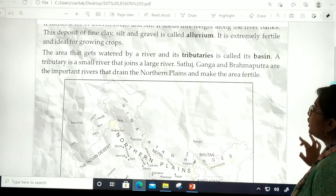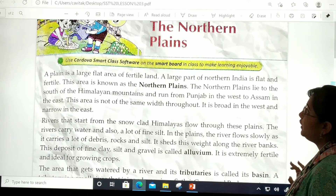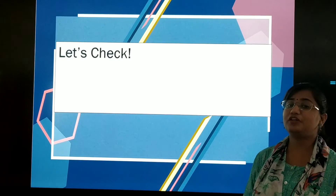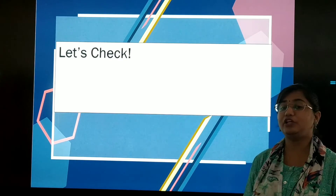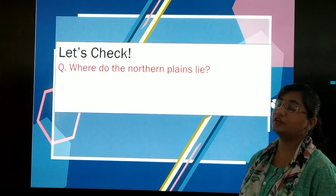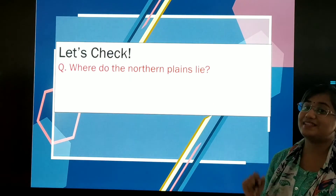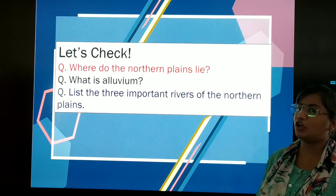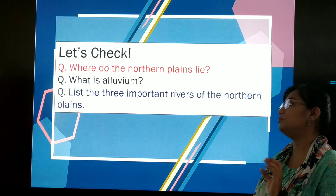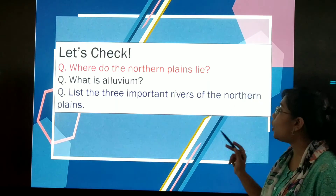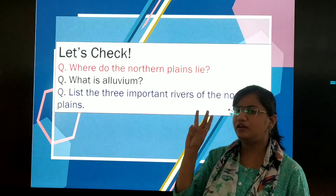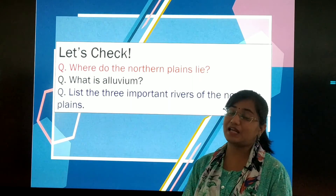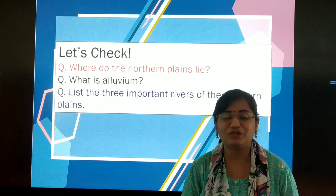Dear children, today we are done with the introduction of lesson number 3, the Northern Plains. Now we will go through a worksheet which you will be solving in your notebook. Number 1: where do the Northern Plains lie? Number 2: what is alluvium — write the combination of materials and the names of those minerals. Number 3: list the three important rivers of the Northern Plains. We will meet next time with another topic of this lesson. Till then, refer your textbook dear children. God bless you all.